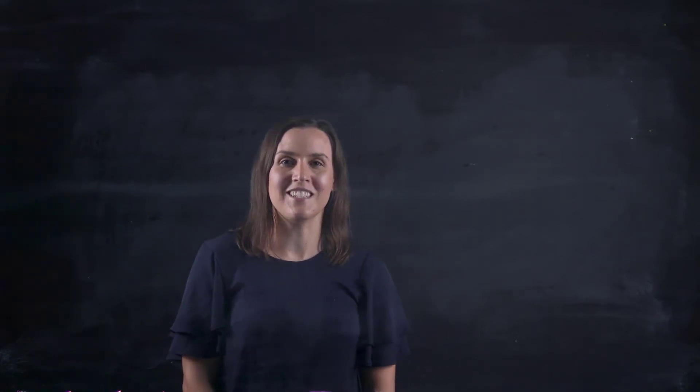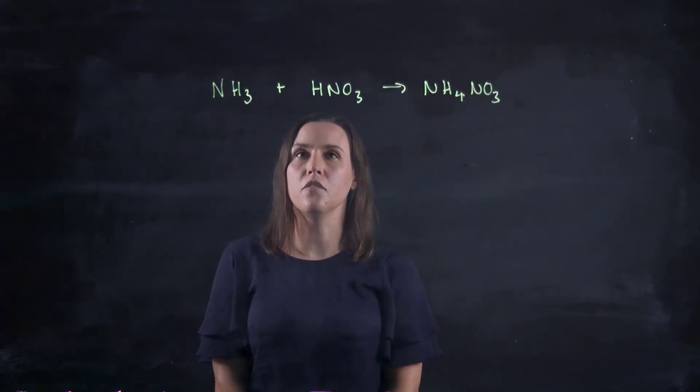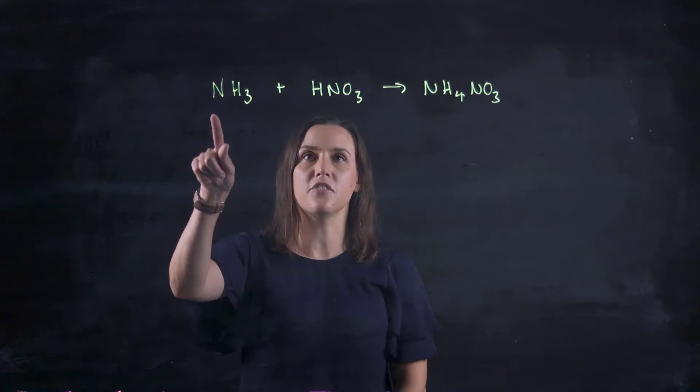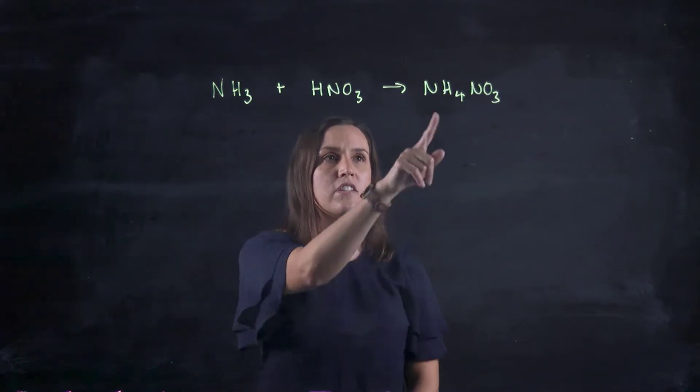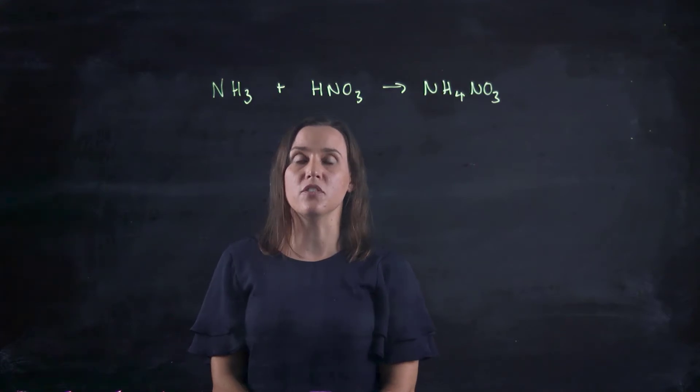First of all, before we get into percentage yields, let's look at stoichiometry. So this is the reaction I'm going to use: NH3 + HNO3 going to NH4NO3. So the first thing I need to do is make sure that this is balanced.